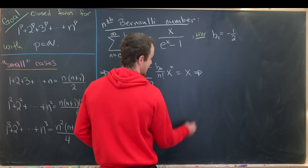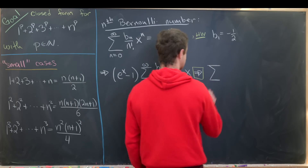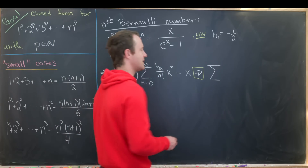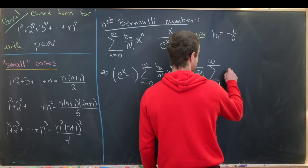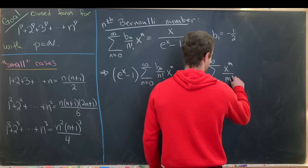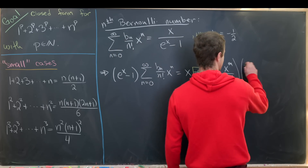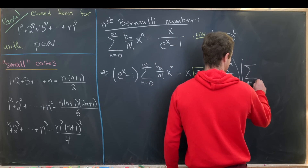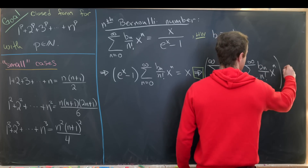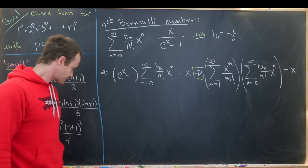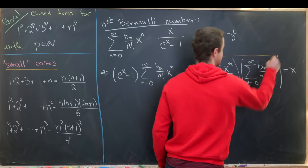Let's expand e^x minus 1 as a power series — just like e^x but leaving off the zeroth term — so it's the sum as m goes from 1 to infinity of x^m over m factorial. Then multiplied by the exponential generating function, the sum as n goes from 0 to infinity of b_n over n factorial times x to the n, equals x.